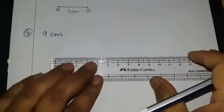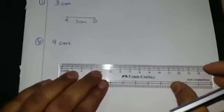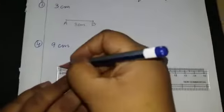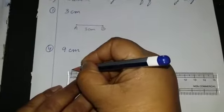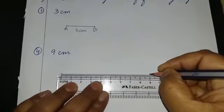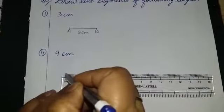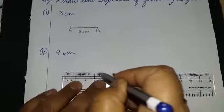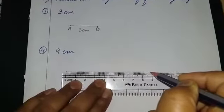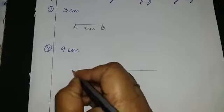Now the next question is 9 cm. Again children, keep the scale properly. First you have to mark on 0, then mark on 9 because you have to make 9 cm, then draw the line up to 9 cm. Don't cross the line and don't let your scale move, otherwise the line will not be straight.